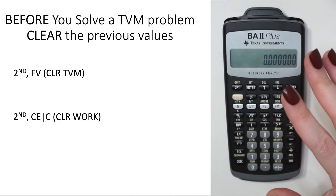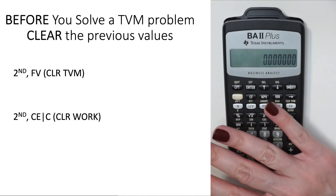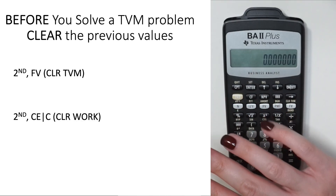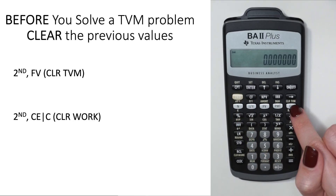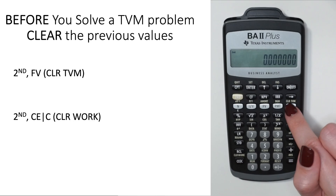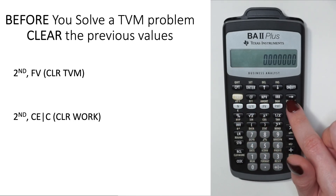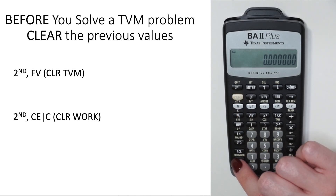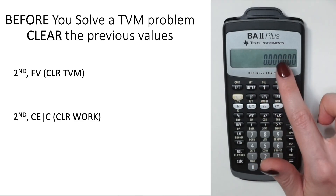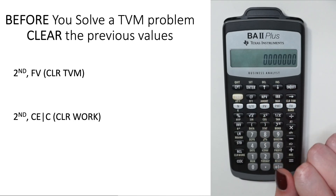Whenever you solve a new time value of money function, the first thing you want to do is clear out whatever you've solved before. There are two places to clear. First, click 2nd then Future Value — that clears all your time value of money calculations. Second, do 2nd then the Clear button in the bottom corner — that clears out anything you're currently calculating. Those are the two buttons to clear whenever you start one of these problems.